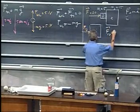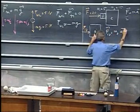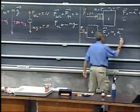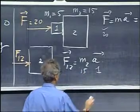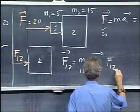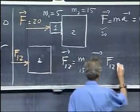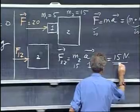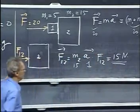F12 equals M2 times A. We know A is one. We know M2 is 15. So we see that the magnitude of the force one-two is 15 newtons. This force is 15.